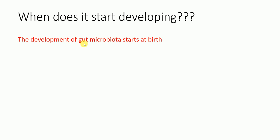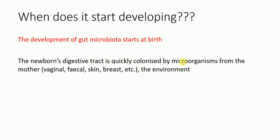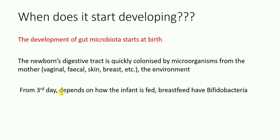When does the microbiota actually start developing? The microbiota starts developing at birth. When the baby is born, microorganisms immediately colonize the baby. The newborn's digestive tract is especially colonized by microorganisms from the mother — from the vagina, the skin, the breast — and also from the environment in which the delivery takes place. From around the third day, the microbiota depends on how the infant is fed.